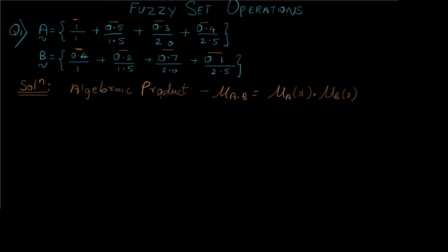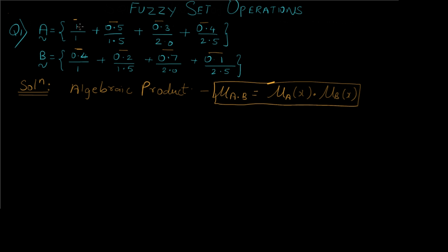Now let's look at algebraic product. The formula for algebraic product says that we just have to take the multiplication of the numerators that have the same denominators. You cannot multiply a value with a different-denominator value — only numerators sharing the same denominator are multiplied together.